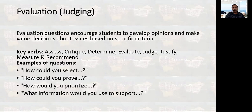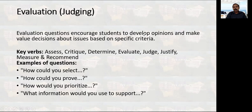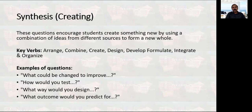Level five is Evaluation. Evaluation questions encourage students to develop opinions and make decisions about issues based on specific criteria. Keywords that may be used include: assess, critique, determine, evaluate, justify, recommend. Example questions include: How do you select? How do you prove? How do you prioritize? What information would you use to support? If you ask like this, you are at level five of Bloom's taxonomy.